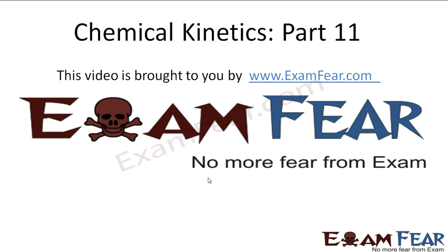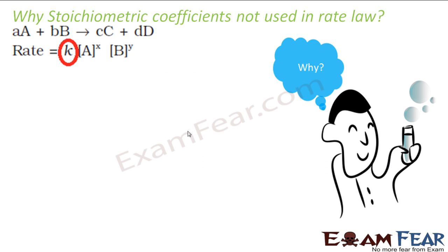This video on chemical kinetics part 11 is brought to you by examfear.com. The chemists were confused: why in the rate law do X and Y have to be found experimentally? Why are A and B not used? They were confused about this.